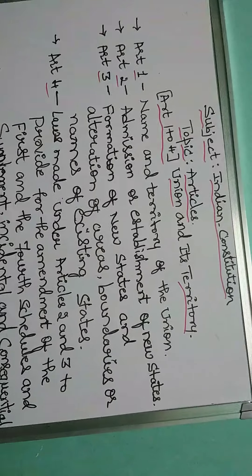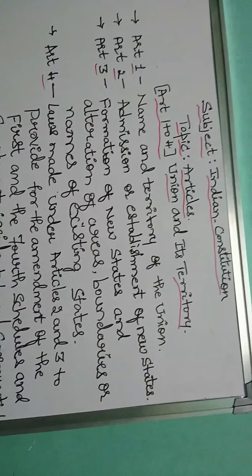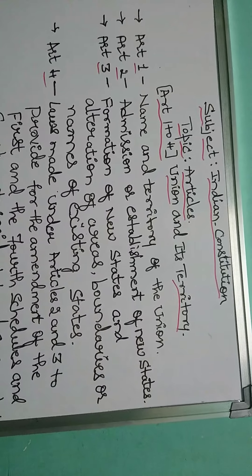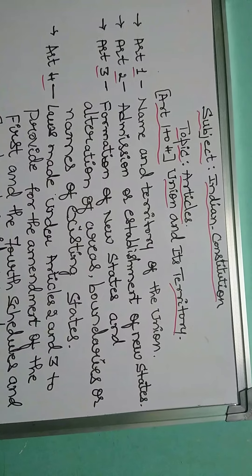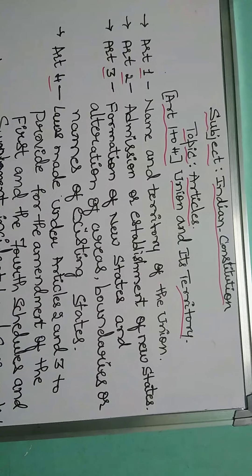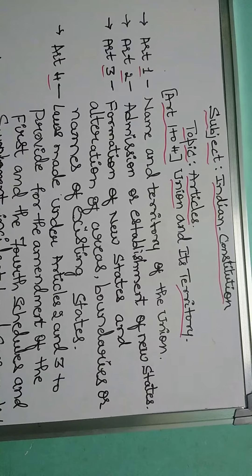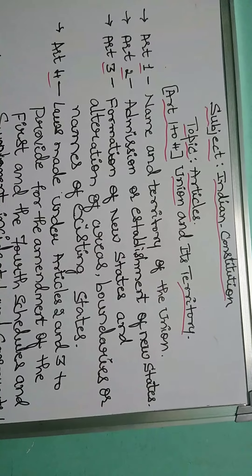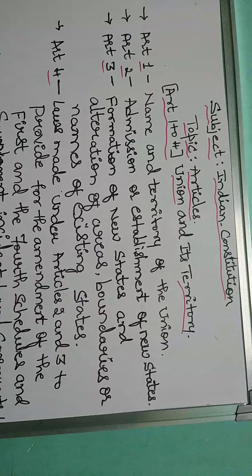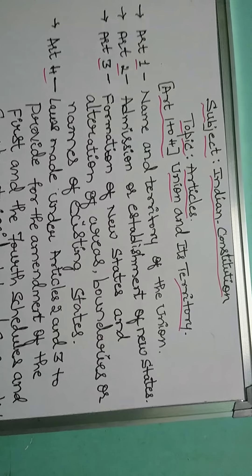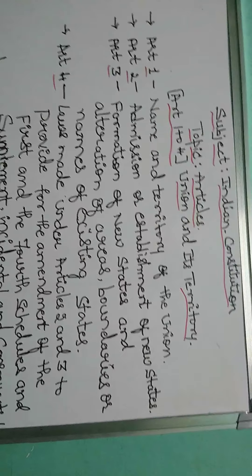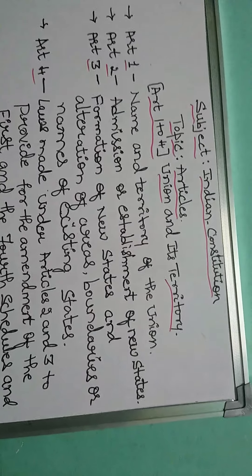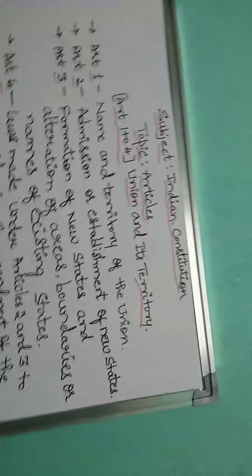Article 1 is about name and territory of the union. The term 'union' has been used on a national scale. For example, Karnataka state was named Karnataka in 1973. Before that it was Mysore state.